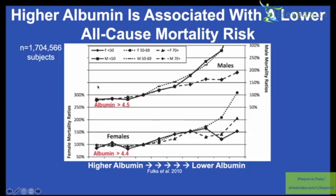Higher albumin — greater than 4.5 milligrams per deciliter, or 45 grams per liter — in men, and greater than 44 in women, is associated with the lowest risk of death for all causes. Each of the different data points represents different age groups: less than 50, 50 to 69 years old, and greater than 70. As albumin levels decrease, risk of death for all causes increases for both sexes.